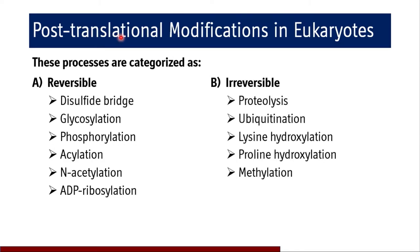Under the irreversible category there are proteolysis of proteins, ubiquitination, lysine hydroxylation, proline hydroxylation which happens in collagen, and methylation. These are the reactions which occur on amino acids in a protein and result in irreversible post-translational modification.